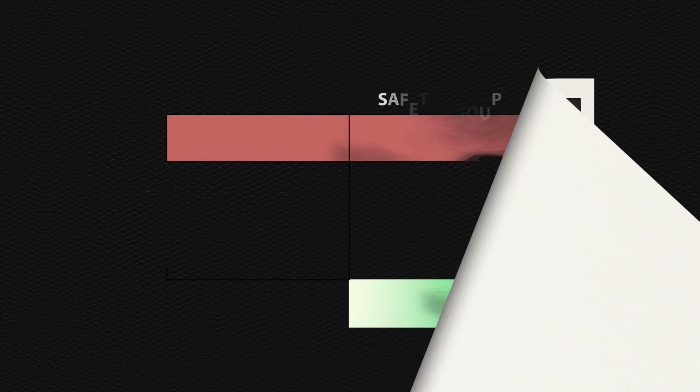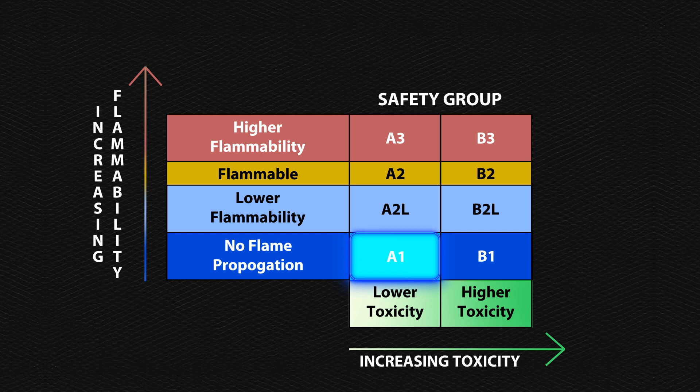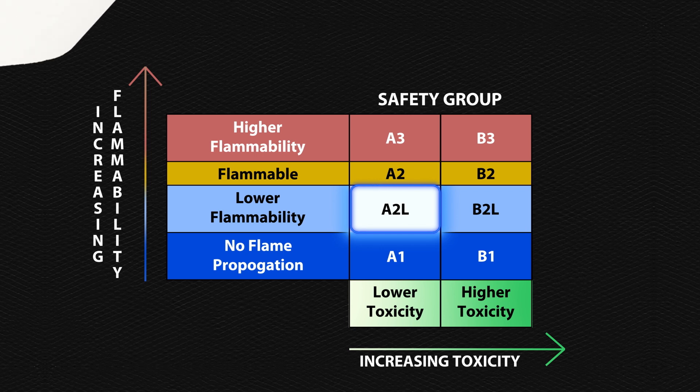ASHRAE classifies refrigerant by toxicity and flammability. A1 refrigerants have lower toxicity with no flame propagation, whereas A2L refrigerants have a lower flammability.